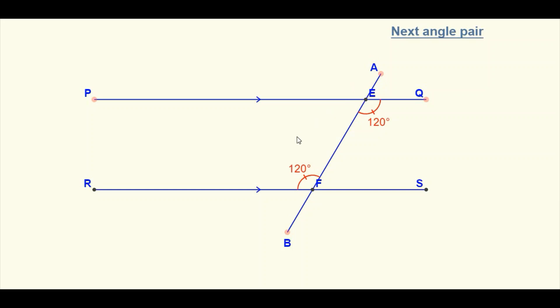note that despite the position of the transversal, both angles are still alternate to each other. It's just that they have a different measurement based on where the transversal is. So in this case, they have a measure of 120 degrees.